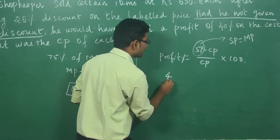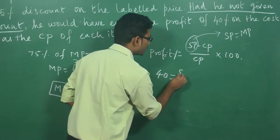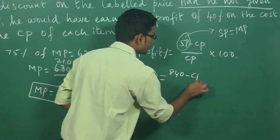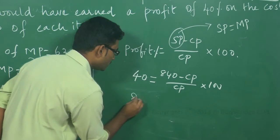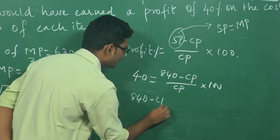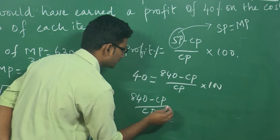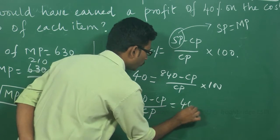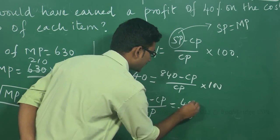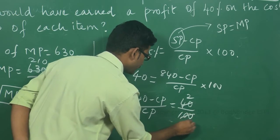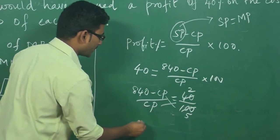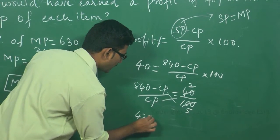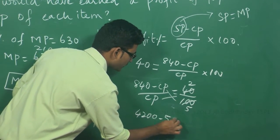Profit percentage is given in the question as 40 is equal to 840 minus cost price by cost price into 100. 840 minus CP by CP is equal to 40 by 100. That can be written as 2 by 5 by cross multiplying. This will become 4200 minus 5CP is equal